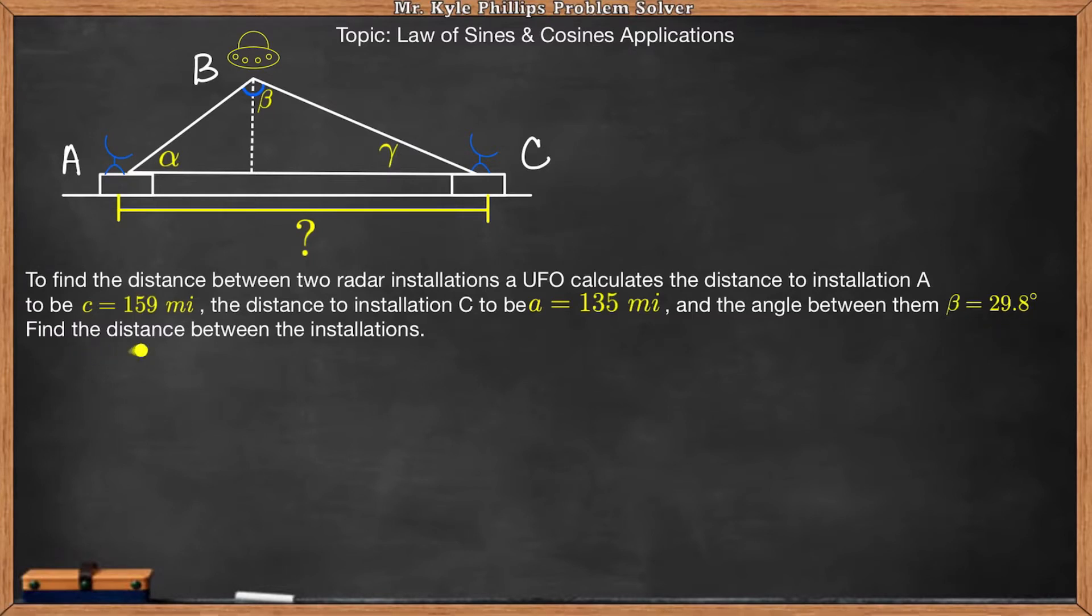Now find the distance between the installations. So we're looking for the distance from satellite station A to satellite station C. So let's fill in what we know. They told us that C is 159 miles. Now remember, any time you see lowercase C, that is leg C, and leg C must be directly across from angle C. So if this is angle C, directly across from that is leg C. So this is where I'll write 159 miles.